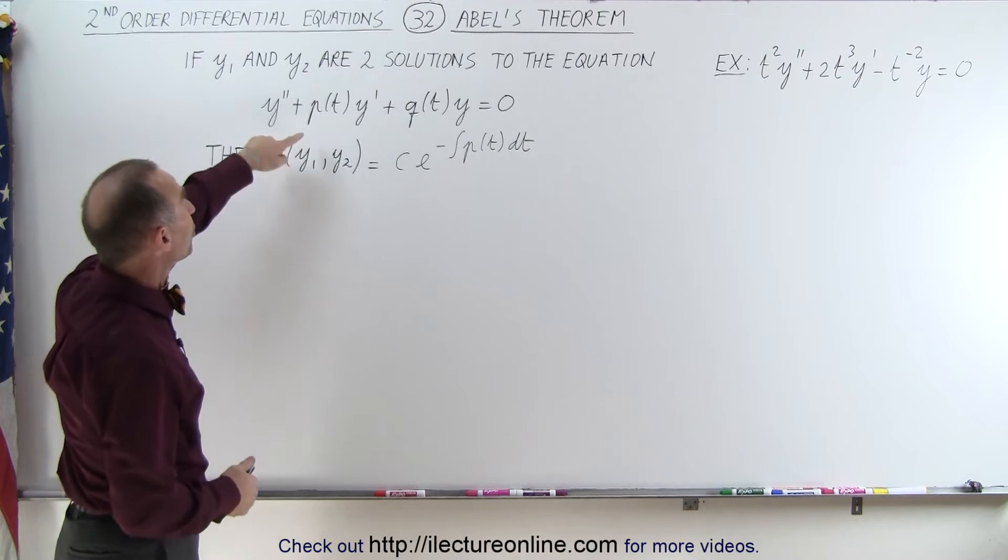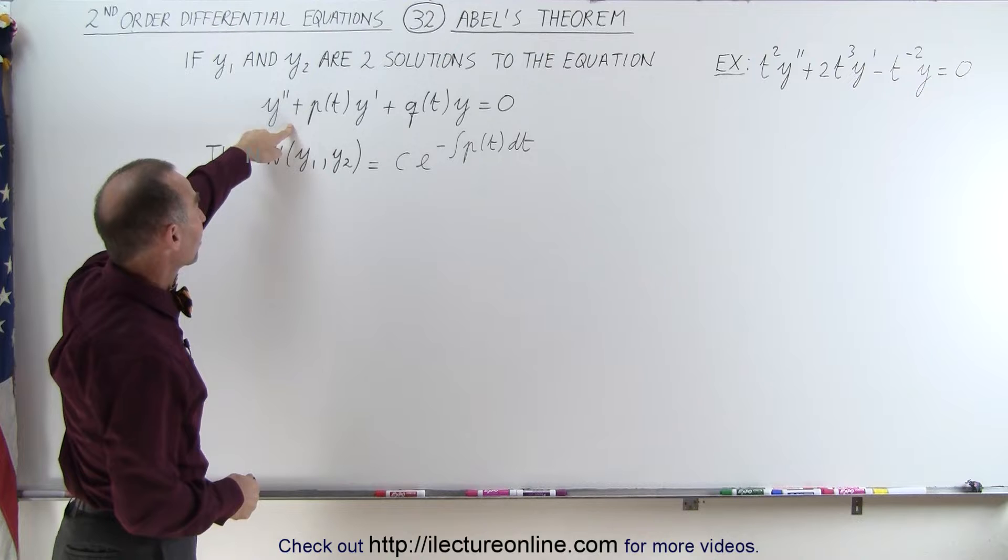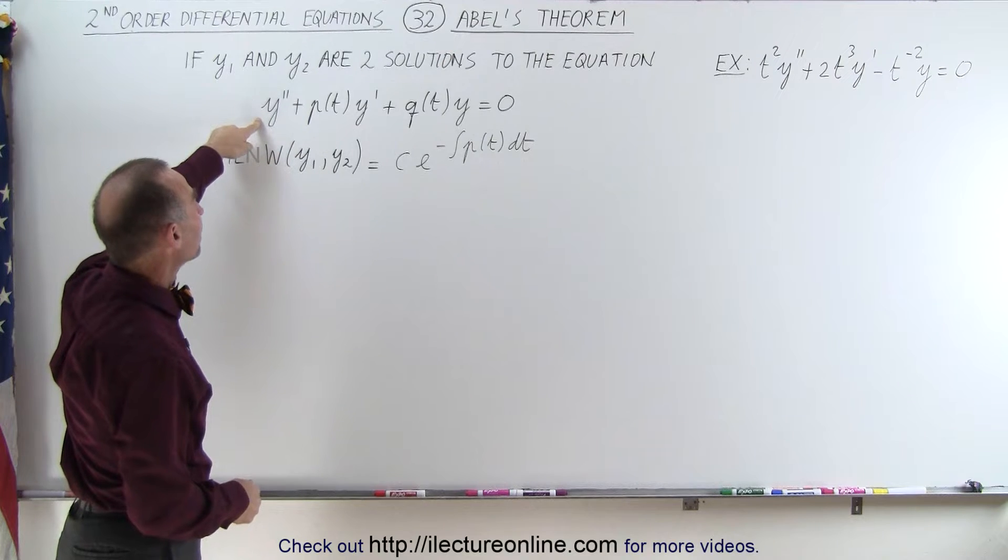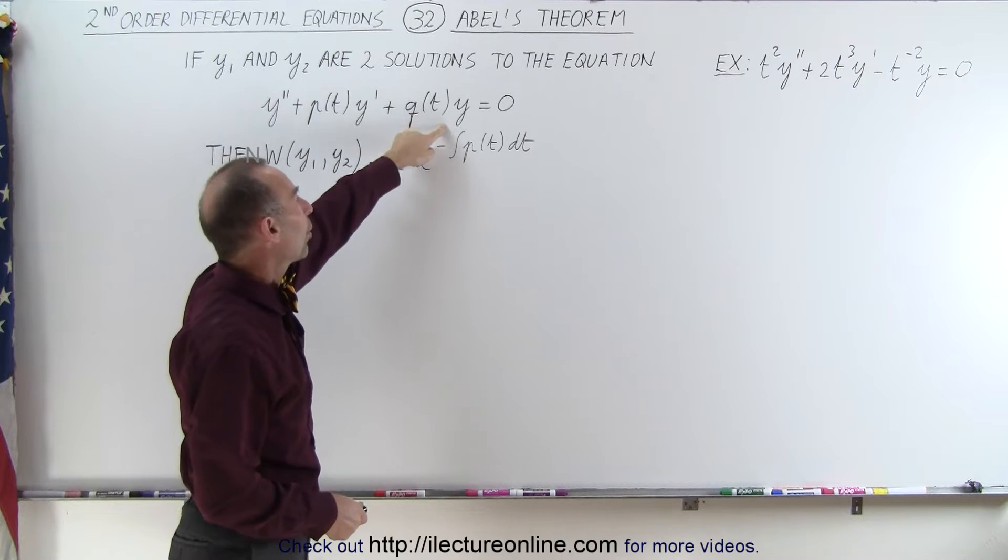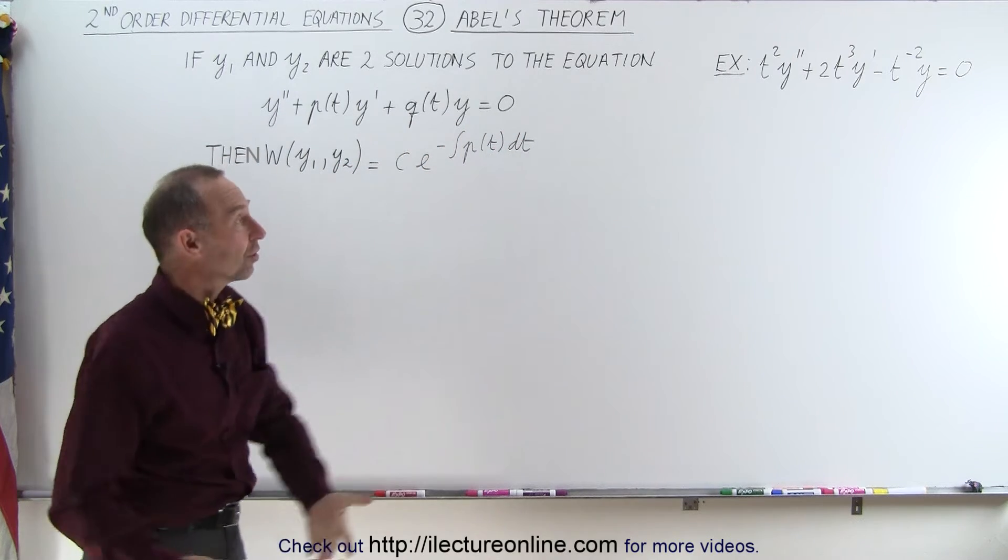If we have a homogeneous second-order equation like this, where we have y double prime plus some function times y prime plus another function times y, and of course equal to zero since it's homogeneous,